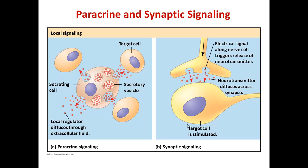In paracrine and synaptic signaling, the signal diffuses to surrounding cells. A cell secretes a signal and that signal diffuses to other cells in the neighborhood — not just next-door neighbors but cells in the broader local area. This frequently creates a gradient of the signal in which cells that are closest receive more of the signal and cells that are farther away receive less. This can be very important for development, as cells may develop based on how much of the signal they receive.